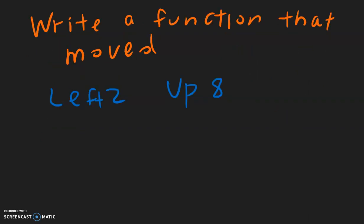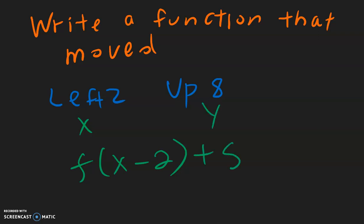This example is basically what we were doing in reverse. Let's write a function that moved left two spaces and up eight spaces. Left and right is the x direction, and because that's on the inside, it's going to change — this positive 2 changes to negative 2. So inside, we have x minus 2. And outside does not change, so this outside stays the same.